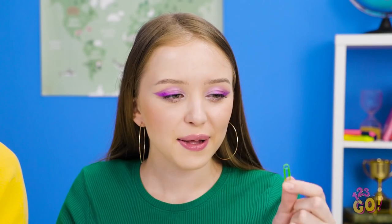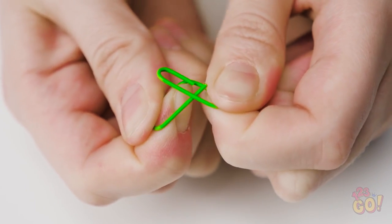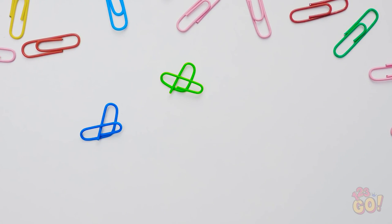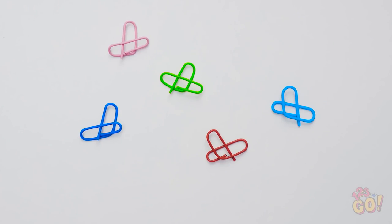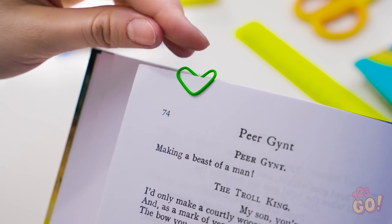Take a regular paper clip like this one and bend the ends up and inward. See how it kind of looks like an X? Once you've done one, you can do the same thing to other paper clips of different colors. Aw, they're so cute! Hey, Amy, check this out! With this little guy, you'll never lose your place again! Aw, it looks like a little heart!